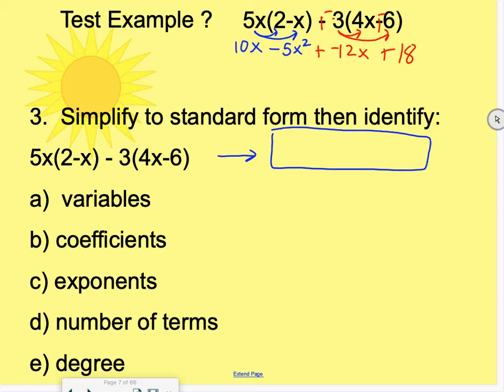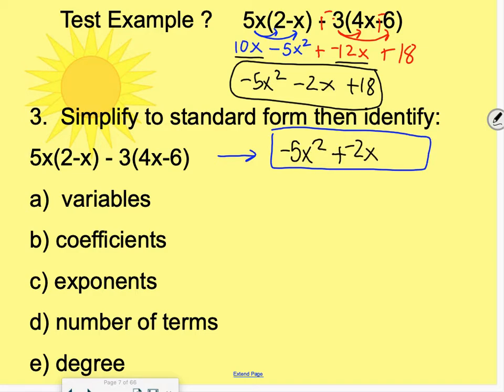But we're not done because then we have to combine any like terms. And like terms have the exact same variable parts with them. So the negative 5x squared is the only part there. 10x minus 12x is a negative 2x. And the 18 is a positive term. So this is our final expression. It's in standard form. You could change that from minus 2x to plus negative 2x. That's fine as well.